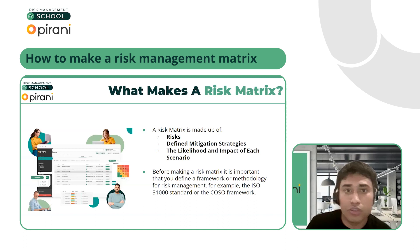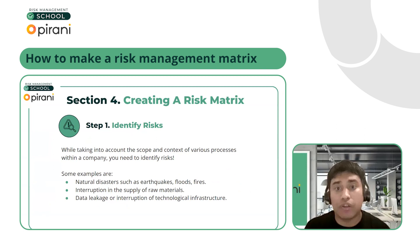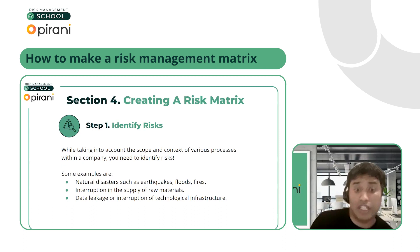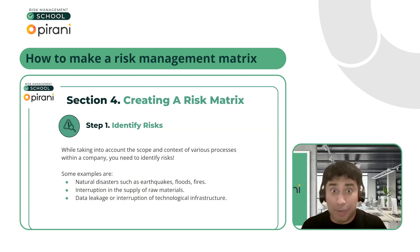Now we're getting to the real meat and potatoes of today's webinar: creating a risk matrix. The most important thing is understanding your context or framework. Once you've identified that framework, you're going to want to identify your risks — taking into account the scope and context of your processes. Are there natural disasters in your area? Supply chain issues you could foresee? If you're in tech, understanding how your data is stored and kept, making sure data security is up to date — very important these days.